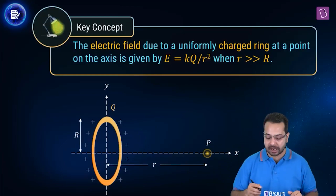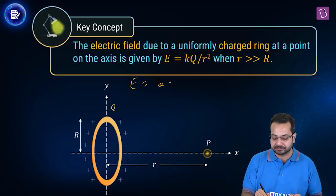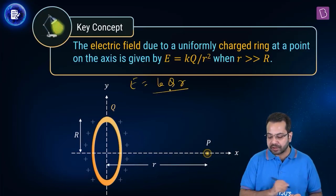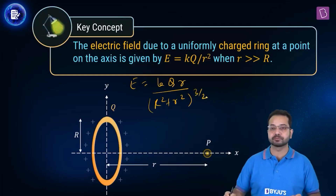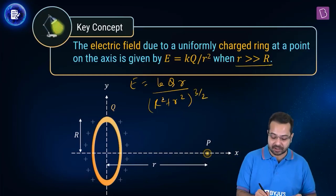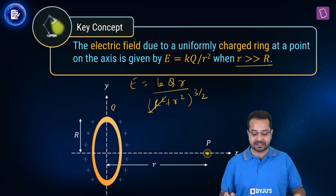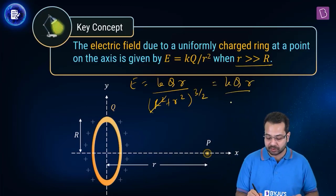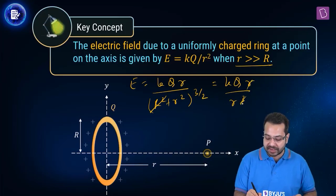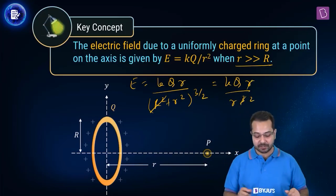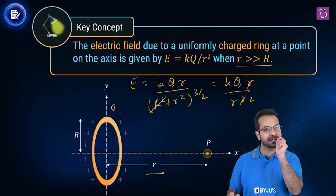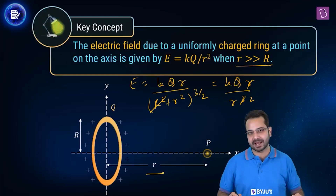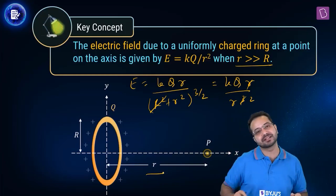Let me show how this is derived. On a point on the axis, the electric field is given as KQr / (R² + r²)^(3/2). Since small r is much, much greater than capital R, R² can be neglected. This becomes KQr / r³ = KQ/r², which means that if the point is very far away from the ring, the ring behaves as a point charge. No special formula needed.